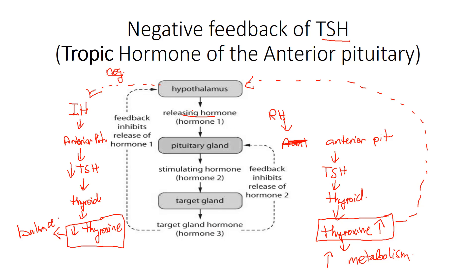Whenever you get these types of questions, the best strategy is to fill in the information: releasing hormone → pituitary → fill in hormone two (in the case of metabolism, TSH) → targets the thyroid → hormone three is thyroxin → thyroxin increases metabolism, burning energy quicker to meet ATP demand in fight-or-flight. Fill all these things in before looking at the answer choices and it will make a lot more sense. If you have any issues with negative feedback or tropic hormones, just send me an email. Thank you.